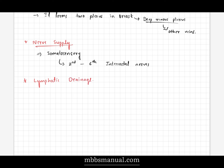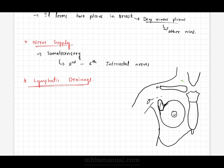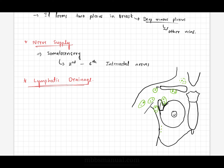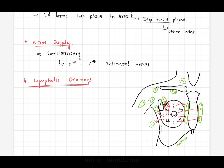Lymphatic drainage of the breast: knowledge of the lymphatic drainage is of great significance to surgeons because of the metastasis of carcinoma of the mammary gland. It is divided into two important components: the lymph nodes draining the breast and the lymphatic drainage of the breast. The mammary gland is divided into four quadrants: upper medial, upper lateral, lower lateral, and lower medial. The diagram shows lymphatic drainage from the four quadrants to various lymph nodes surrounding the mammary gland.